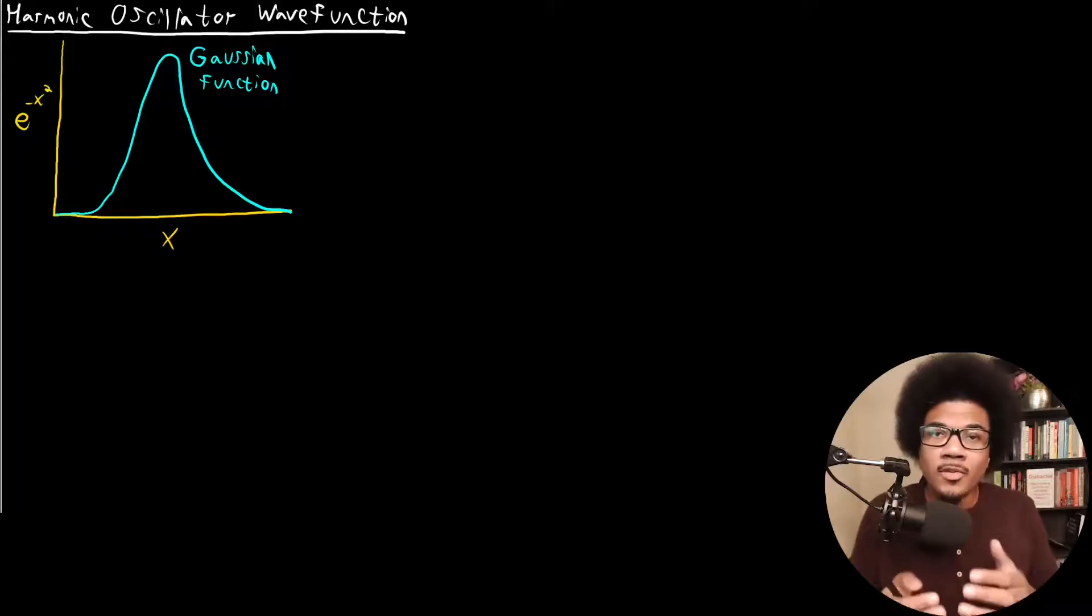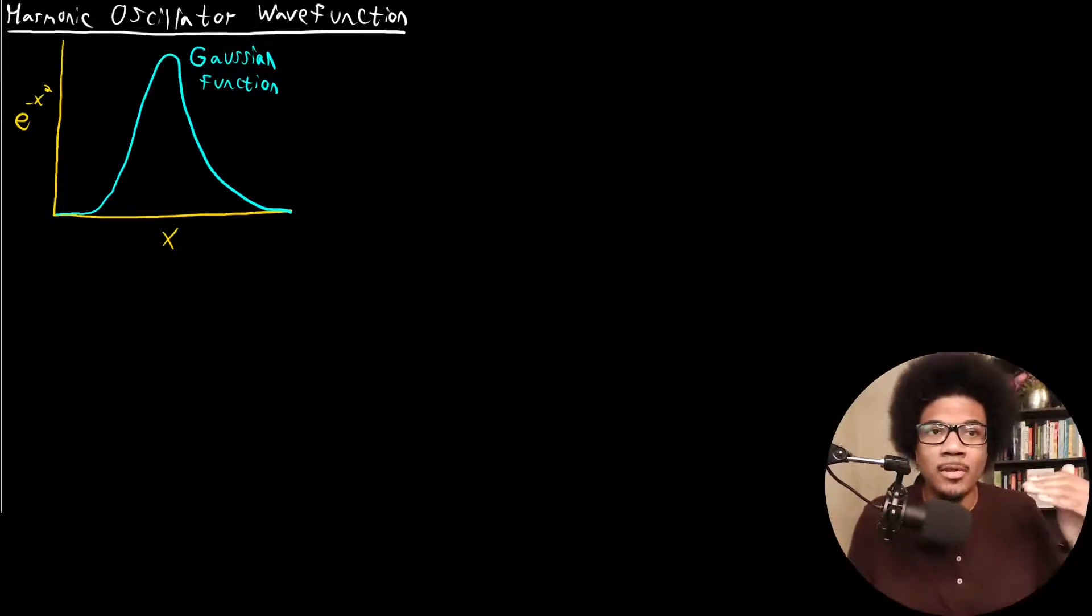In this video, we're going to introduce the harmonic oscillator wave function. Like I mentioned in the last video, I want to take a different approach here. I don't want to derive the wave function explicitly. The mathematics details get really dicey with the harmonic oscillator. So what I want to do instead is talk about qualitatively what we need this wave function to do and why the form of the wave function does what we need it to do.